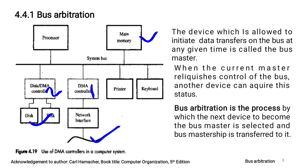Data comes at high speed on the network through the network interface and is collected in the buffer memory of DMA controller 1. DMA controller 1 then transfers this data to main memory at the speed of main memory over the system bus. For that it needs control over the system bus, so it takes permission from the processor — it requests and gets permission, then performs the data transfer. This is direct memory access (DMA): data transfer between main memory and an external device through a DMA controller, directly without intervention of the processor.